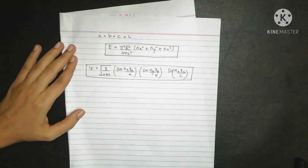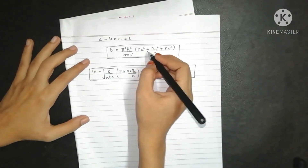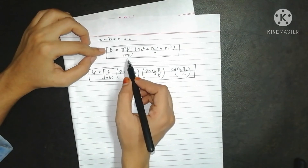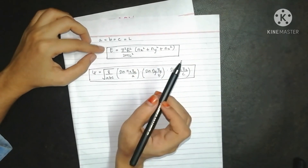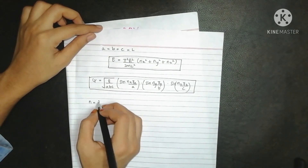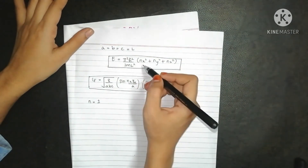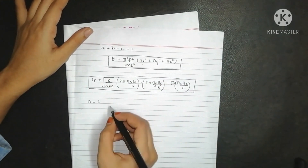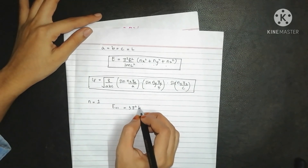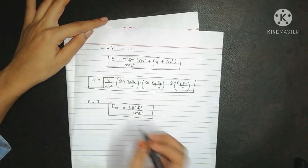Now focusing on the energy equation E = (π²h-bar²/2mL²)·(nx² + ny² + nz²): for the ground state, all quantum numbers equal 1, so nx² + ny² + nz² = 1+1+1 = 3. The ground state energy is therefore E = 3π²h-bar²/(2mL²).